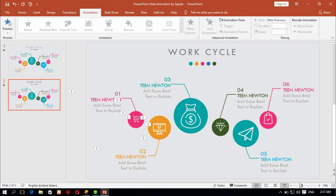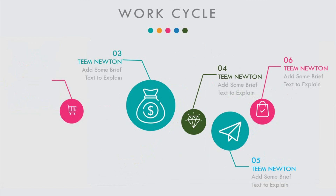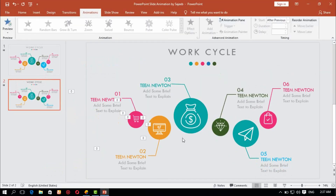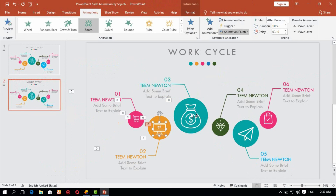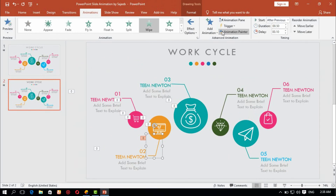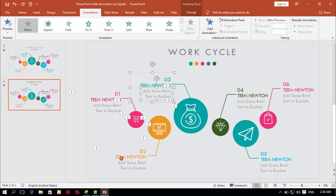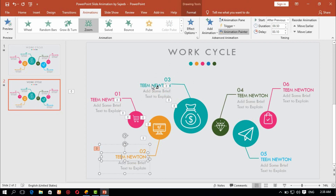Check the animation order. Use Animation Painter to copy animation settings quickly to other elements. Select the source element, click Animation Painter, then apply it to each target element quickly.